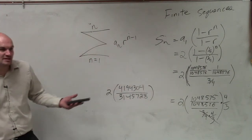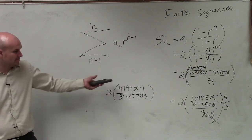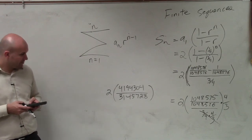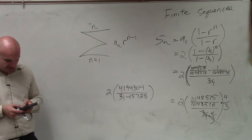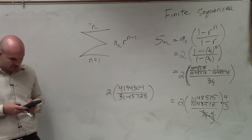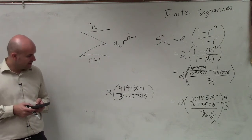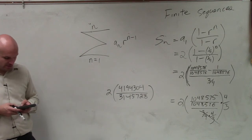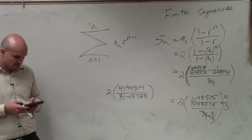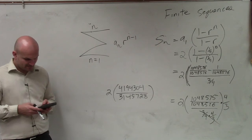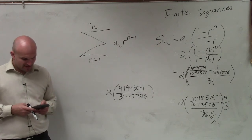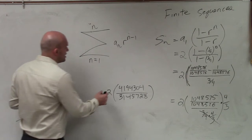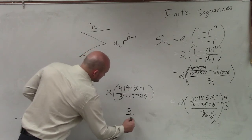The 2 is in the numerator, so I multiply: 2 times 4,194,304 divided by 3,145,728. Then I do the math — fraction, fraction — and reduce down to a sum of 8/3.